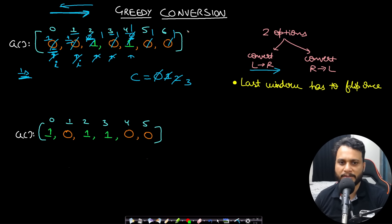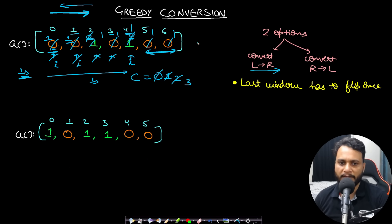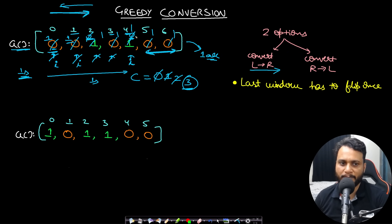We stop at the third-to-last item because a valid window of size three requires at least two items to the right. At that point, everything up to the third-to-last item is guaranteed to be ones. We then check the last two items: if both are one, we have successfully converted the array and the minimum number of operations is our flip count. If either is zero, we return minus one.